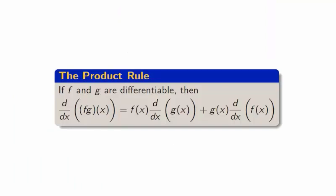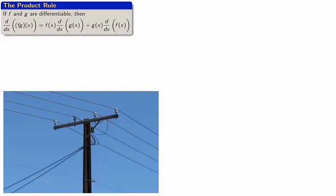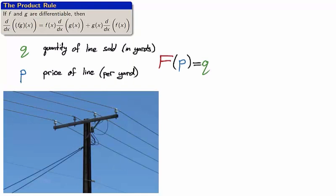The product rule holds for all functions which are themselves the product of two functions. Suppose the manufacturer produces low voltage overhead power lines. The quantity q in yards of power lines sold is a function of the selling price p in dollars per yard.